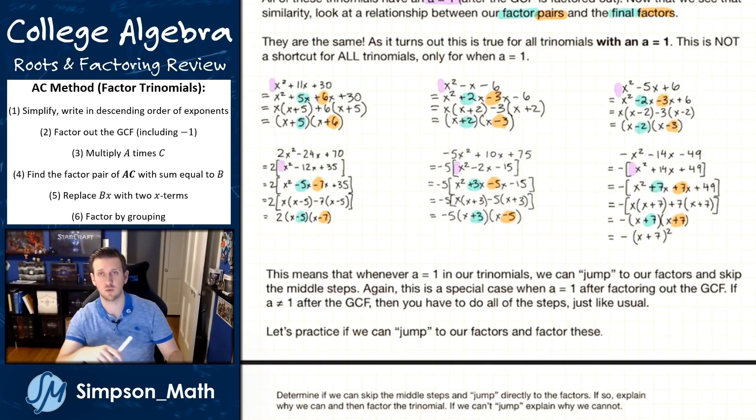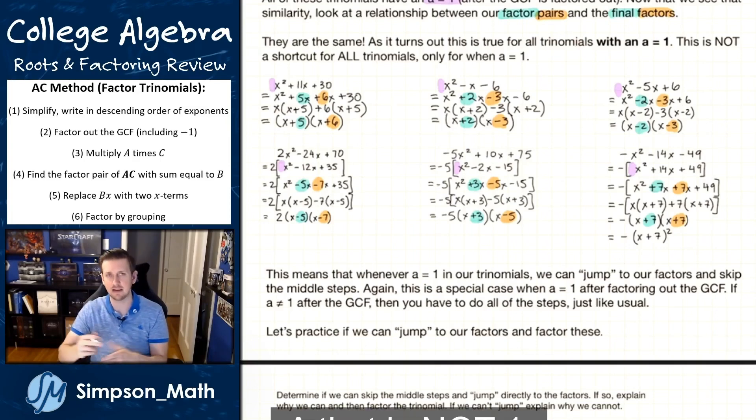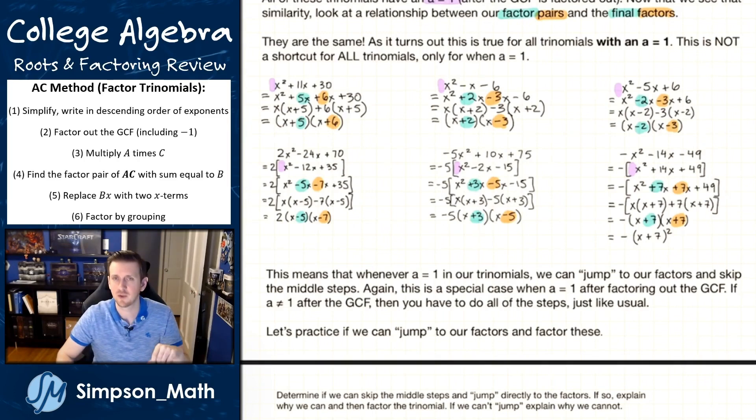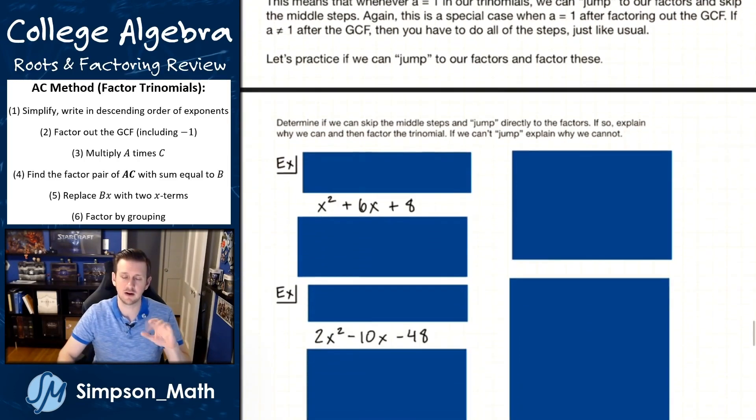But if A is not one, pull out the GCF. You might end up with an A of one. But if you pull out the GCF and you still have an A that's not one, then you need to go through the full steps that you just mastered. All right, so let's practice and see if we can jump in our factoring steps.